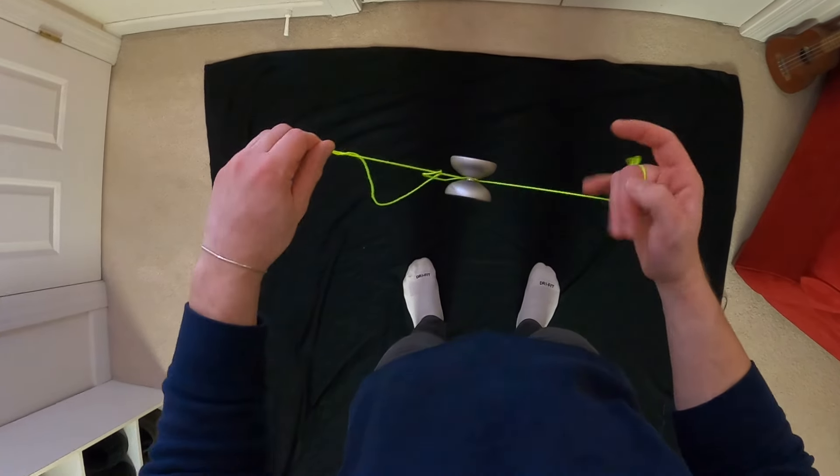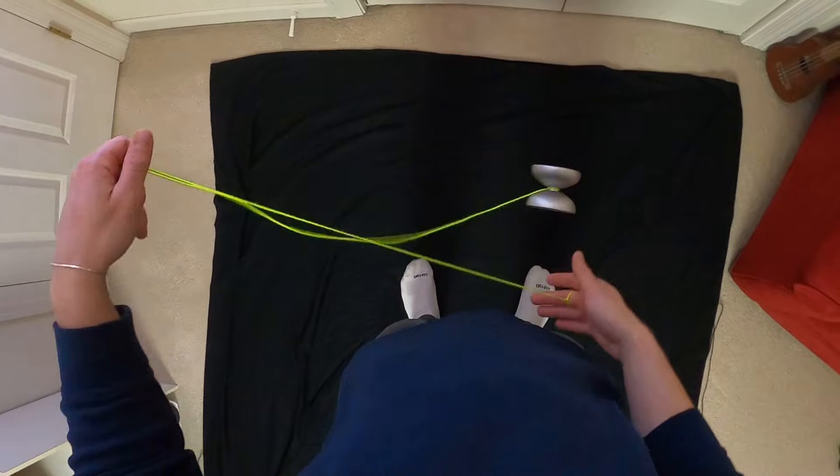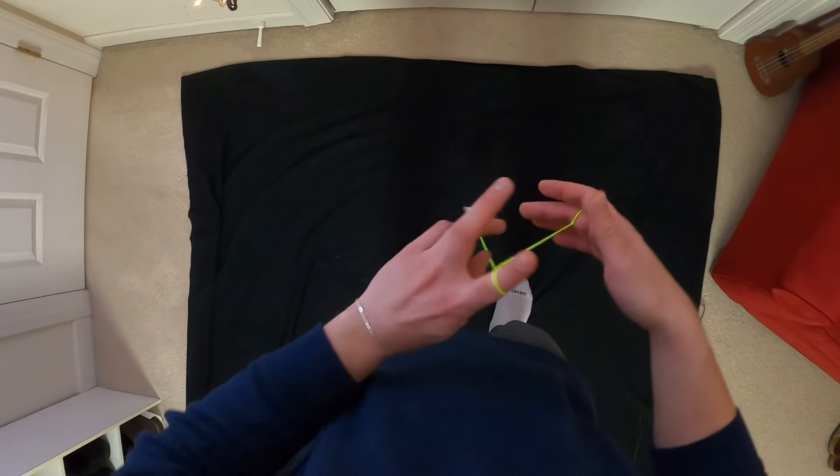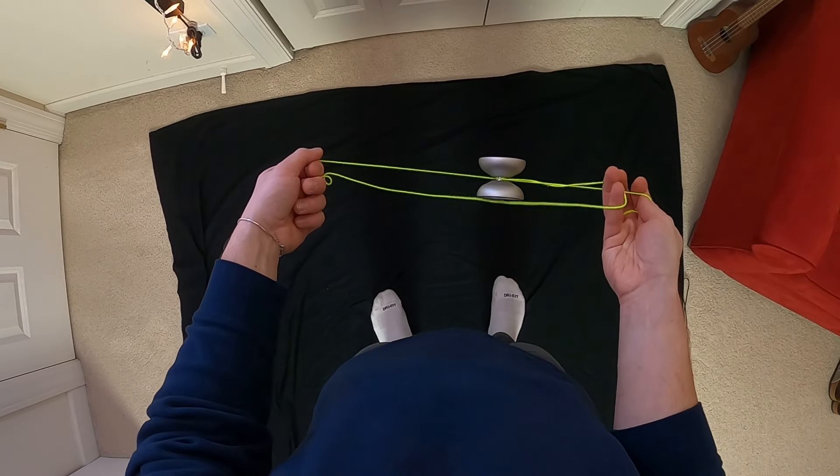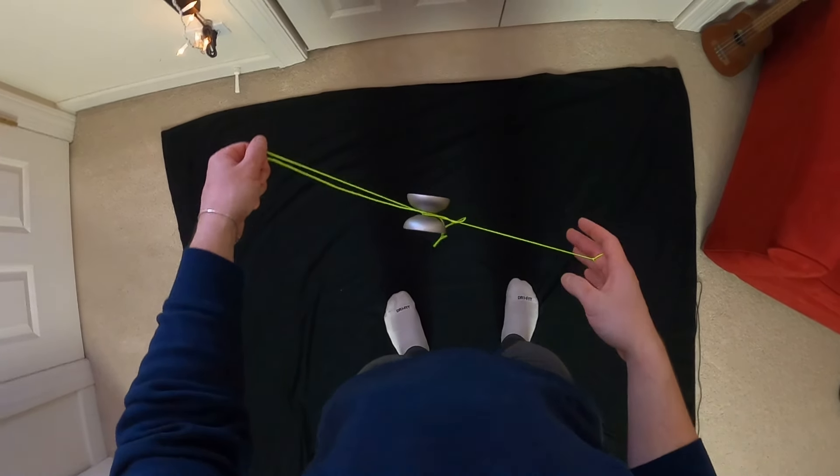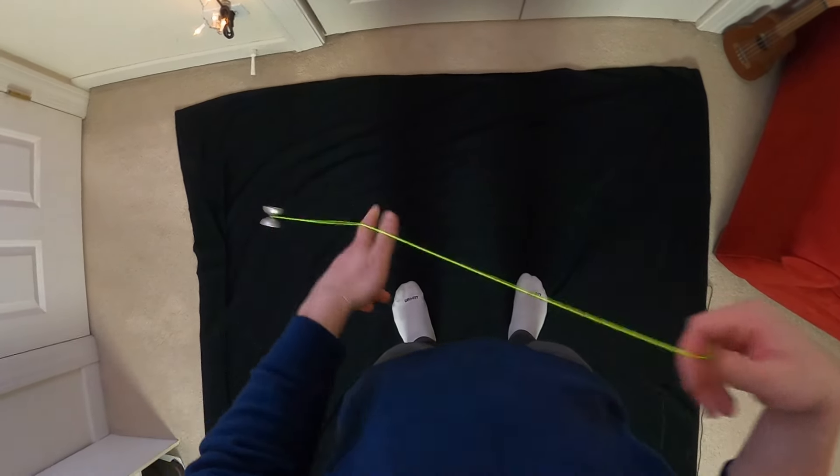So you see how when I did that, the strings kind of swung over itself a couple times. You want it to do that, except you want that string to whip over the back half the yoyo and sit just like that so you can do the upside down green triangle.